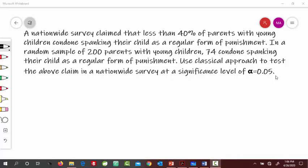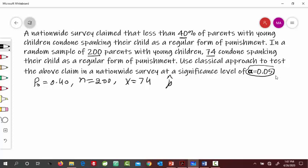In this hypothesis testing question, we have to use classical approach. First we have to extract the information. The claim in the survey is less than 40%, so this is our P0 equals 0.40. Then we have N equals 200 and x equals 74. And the significance level alpha is 0.05. From here we can also write P-hat, the proportion from this sample, that is 74 out of 200, which equals 0.37.